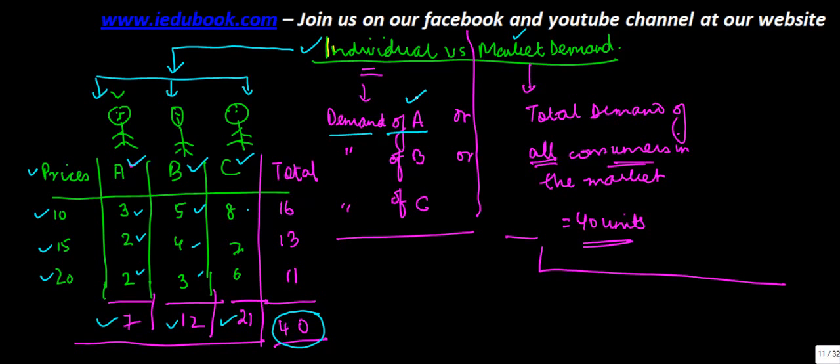This is the demand of A which is 7 units, or demand of B which is 12 units, or demand of C which is 21 units. So this refers to the individual demand of individual consumers.